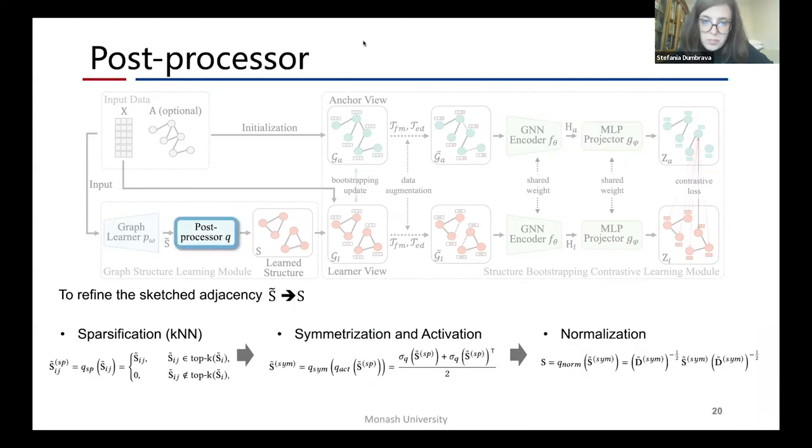Then, a post-processor refines the sketch adjacent matrix into a sparse, non-negative, symmetric, and normalized node adjacency matrix S. The first step is sparsification, which is executed by selecting the connection with top K values for each node. Then, a symmetrization operation is used to generate a symmetric adjacency matrix, and then a ReLU function is used to make sure each element in the adjacency matrix is non-negative. Finally, the normalization processing is to guarantee the edge weights are within the range 0 to 1.